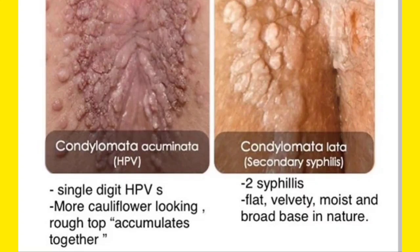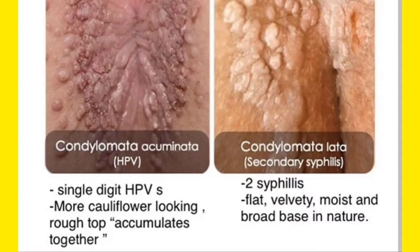Condyloma lata, which you can see on the right side, is found in secondary syphilis. Remember, lata is associated with secondary syphilis. The lesion is flat — not cauliflower-like. Condyloma lata has a broad base and is broad in nature.